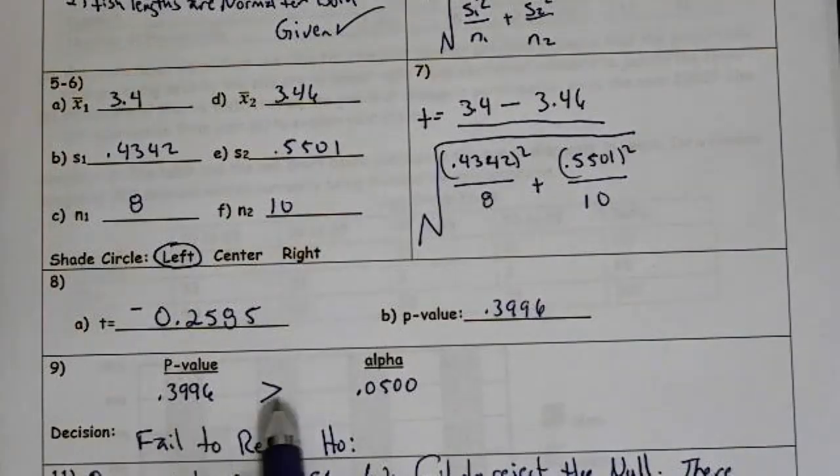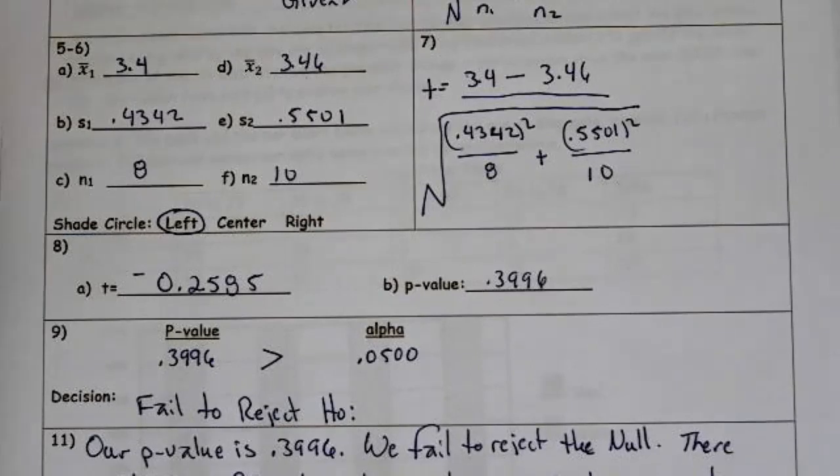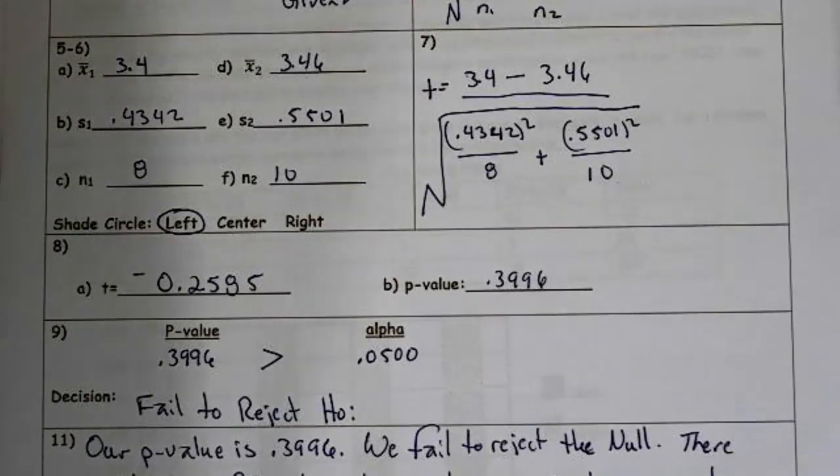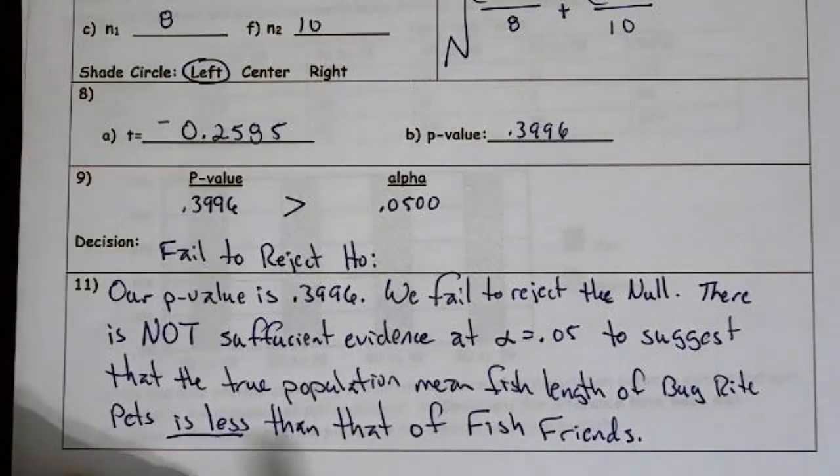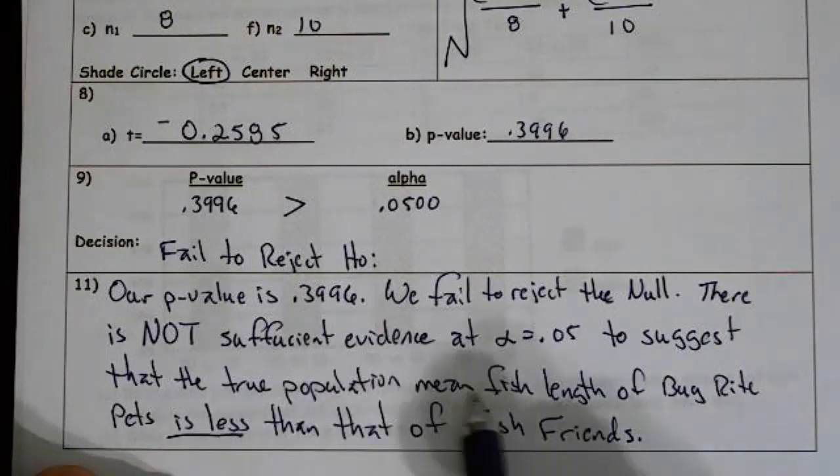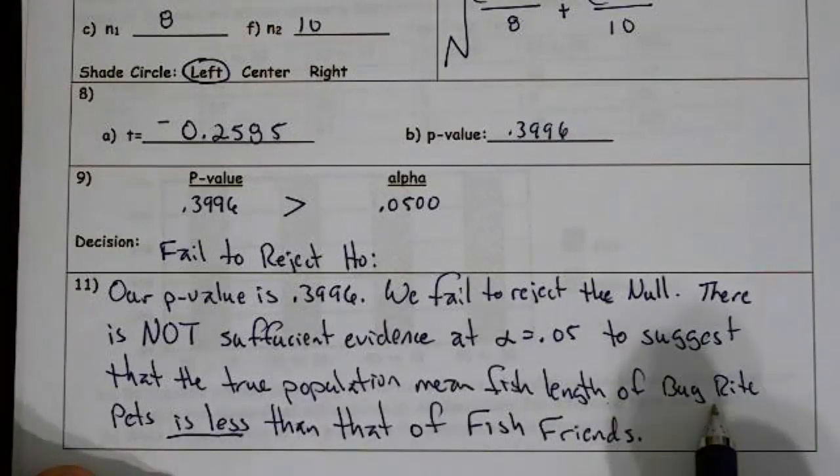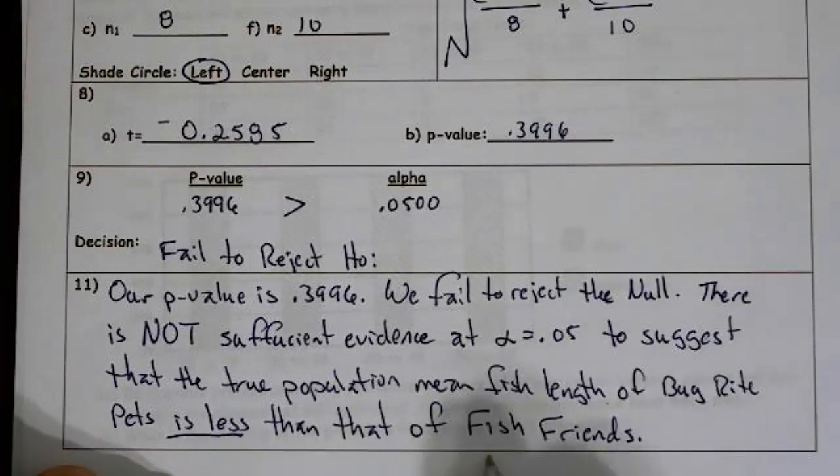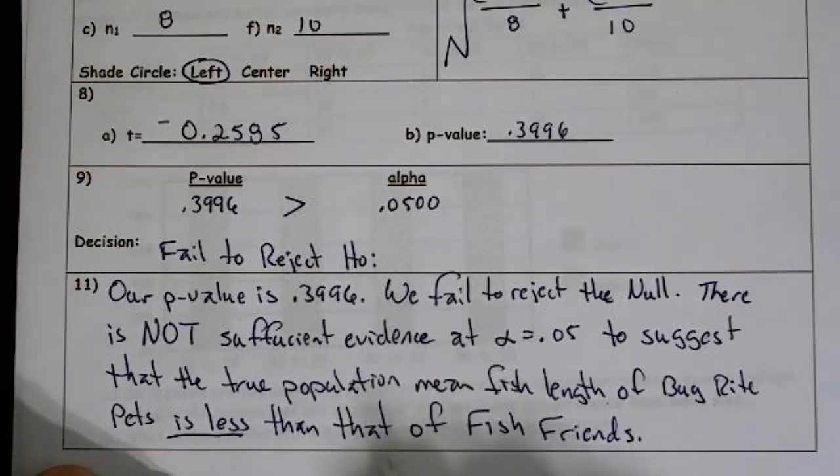And sure enough, 0.3996 is greater than the alpha of 0.05 that they gave us. So, our decision is to fail to reject the null. Our p-value is 0.3996. We fail to reject the null. There is not sufficient evidence at alpha equals 0.05 to suggest the true population mean fish length of Byrite Pets is less than that of Fish Friends. So, if you notice, we do not talk about the difference of the means. We have to do that with the confidence interval, but not with the hypothesis test. So, I hope this helps, and I sure hope I'm back to see you all on Wednesday. See you on the next one.